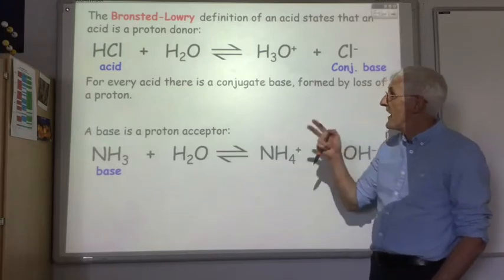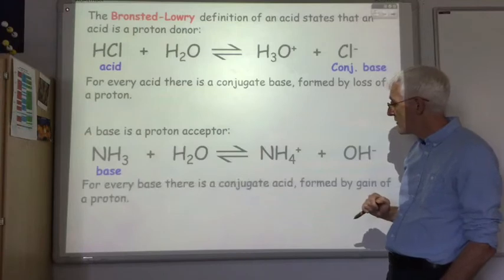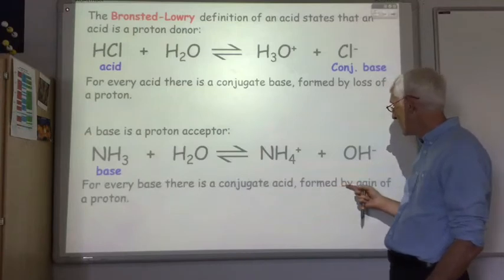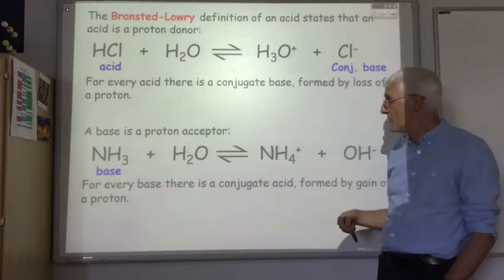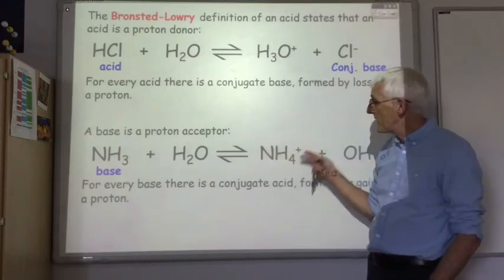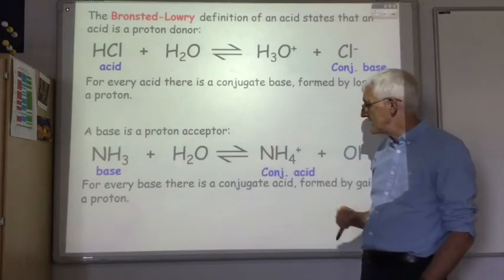And just like for every acid you have a conjugate base, with every base you have a conjugate acid formed. And the conjugate acid is the thing that's formed by the gain of the proton. So this is what we form by the gain of the proton. So the ammonium ion is the conjugate acid.